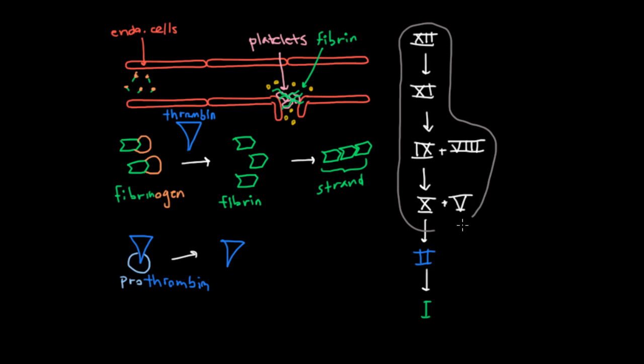And it turns out that we call this part here the intrinsic pathway. And we can talk about what that means later, but for now, let's just give it its name. But what's perhaps more important to be clear about is that in this drawing, 12 is not actually becoming 11, and 11 is not actually becoming 9. What's happening is that 12, when it's activated, is a catalyst to convert 11 from its inactive form into its activated form, which we'll draw 11a. And then once 11 is activated, it serves as a catalyst to convert 9 from its inactivated form into its activated form. And so you see that these arrows are actually more about catalyzing.